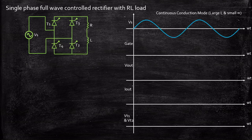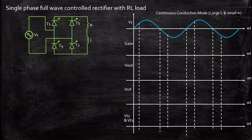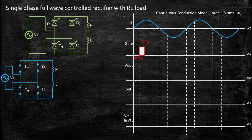We are going to consider a sinusoidal voltage source Vs. Let us extrapolate these waveforms and understand what happens when we apply a gate pulse to thyristors T1 and T2 at instant alpha. So T1 and T2 are triggered at instant alpha. During this instant, the supply voltage is going in the positive direction, with positive connected to the anode of T1 and negative connected to the cathode of T2. Because of this, and because a firing pulse is applied at instant alpha, T1 and T2 will act as short circuits and T3 and T4 will act as open circuits.